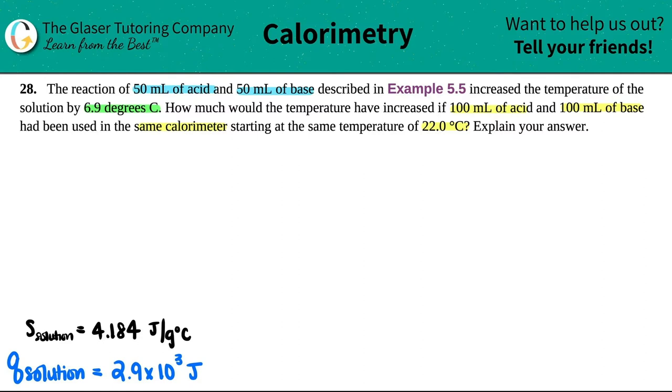So what I gathered was that the amount of heat that was produced in this Example 5.5 was 2.9 × 10³ joules. And they did assume that the specific heat of the solution was acting as water, so it was 4.184.